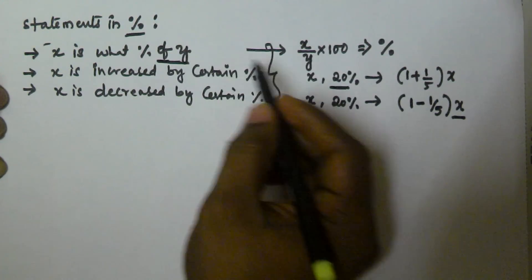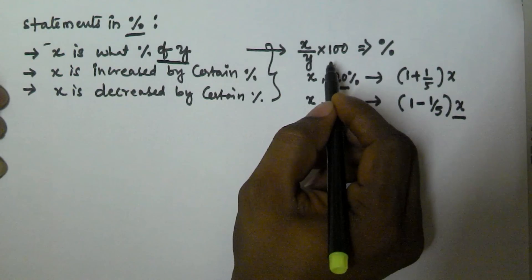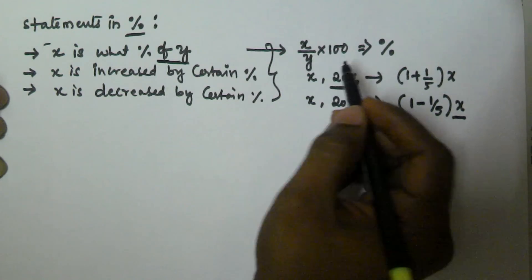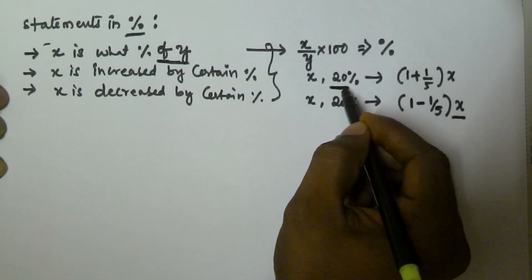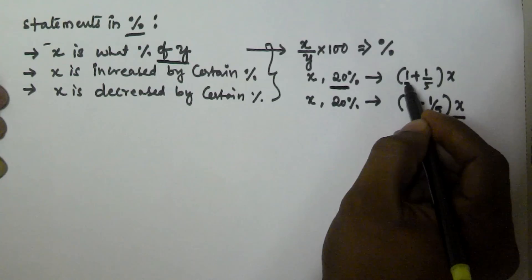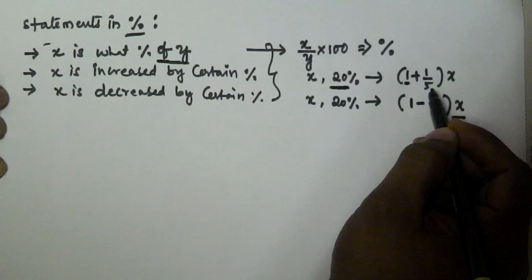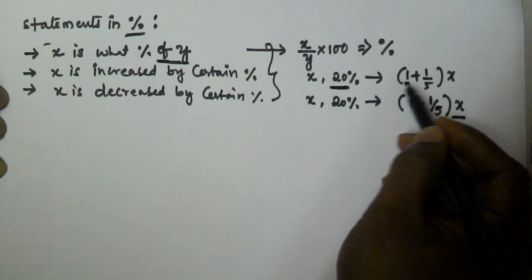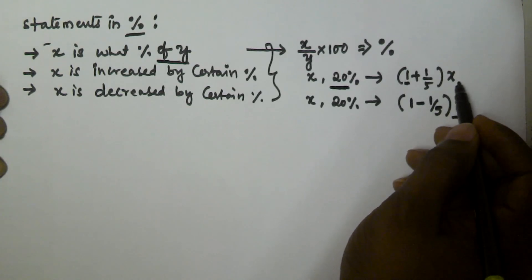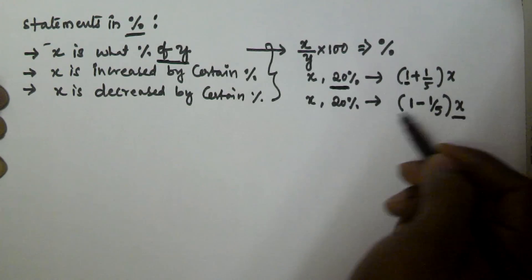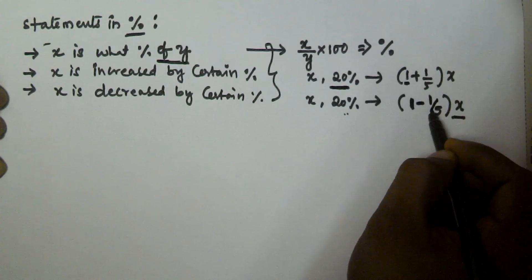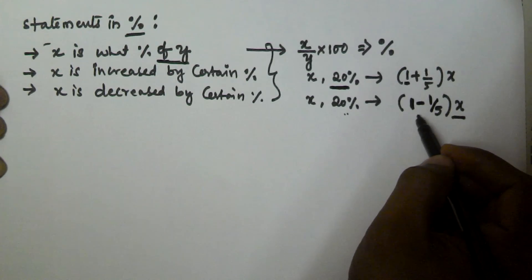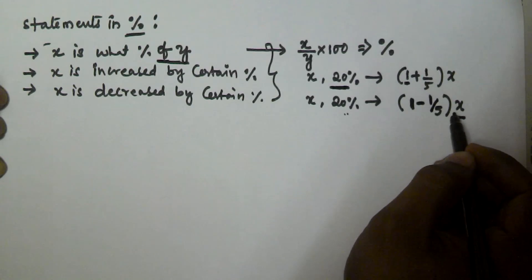To recap: when x is what percentage of y, the percentage value is given by x/y × 100. When x is increased by a certain percentage, for example 20%, we have 100% already there, and we increase by 20% — the fraction equivalent to 20% is 1/5 — giving (1 + 1/5)×x. When x is decreased by 20%, we subtract that fraction: (1 − 1/5)×x.